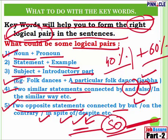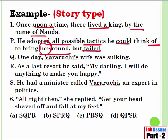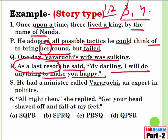Now let us do one para jumble so you understand better. This is a previous year question — a story type para jumble. 'Once upon a time, there lived a king by the name of Nanda. He adopted all possible tactics he could think of to bring her round, but failed.' Here I have 'her' — I need to question what 'her' is referring to. 'One day, Varuchi's wife was sulking. As a last resort, he said, my darling, I will do anything to make you happy. He had a minister called Varuchi, an expert in politics.'